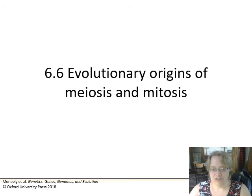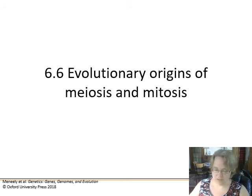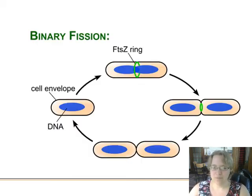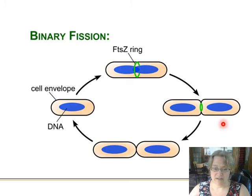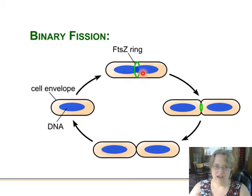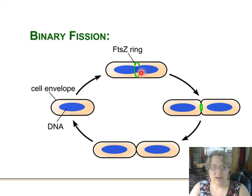To wrap up chapter six: the evolutionary origins of meiosis and mitosis — how did cells start dividing? If we look at prokaryotes, they don't have this cellular organization. There are no centrosomes or spindle fibers. They simply replicate all their DNA and hope that when the cell contracts and pinches into two pieces, half the DNA goes into one new cell and half into the other. That's binary fission.